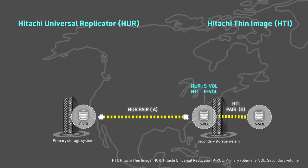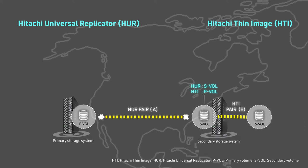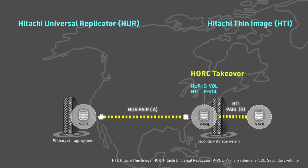If desired, you can also perform a Host Takeover operation on the Universal Replicator pair at any time after the Thin Image pair has been created. The Host Takeover operation swaps the Universal Replicator PVOL and SVOL.